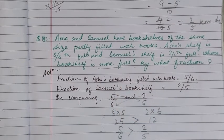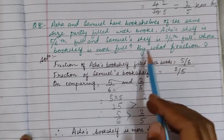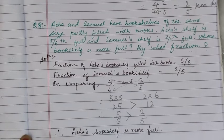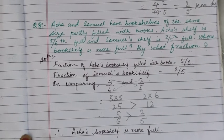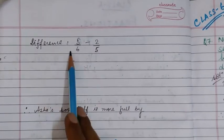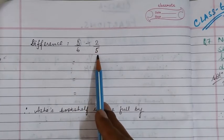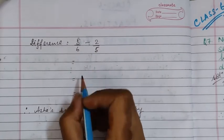Therefore we will write: Asha's bookshelves is more full. Now the question is also asking by what fraction Asha's bookshelves is more full than Samuel's. So we have to find the difference between both fractions. You will write: difference is equal to 5/6 minus 2/5. Now to do the subtraction, we will first take the LCM of 6 and 5, which is equal to 30.